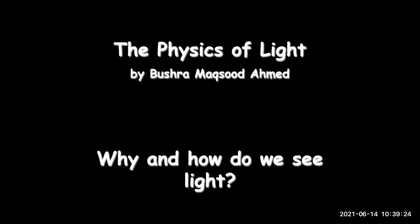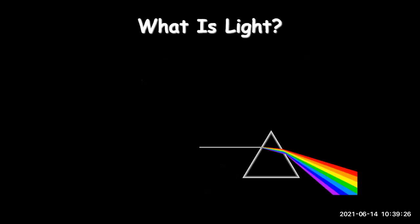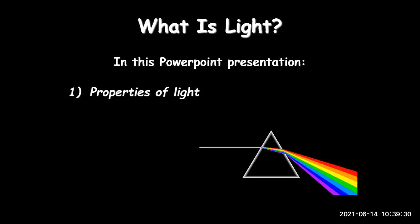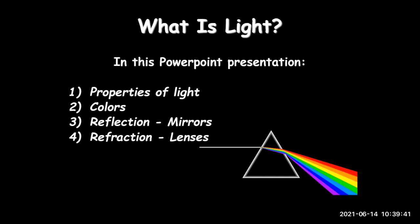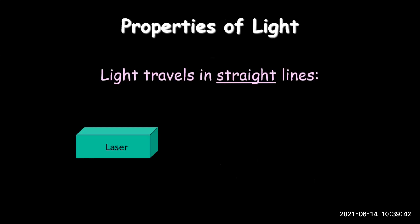In this PowerPoint presentation, first we'll see properties of light, second we'll see colors, third we'll see reflection in mirrors, and fourth we'll see reflection in lenses. Now, what is the first property of light?